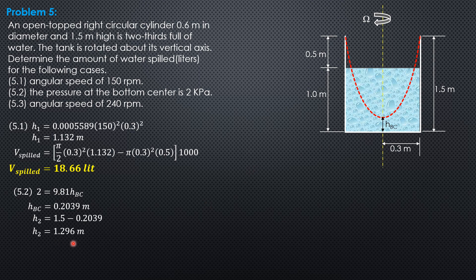Calculating in the same manner: pi over 2 times 0.3 squared times 1.296, minus the original volume of air which is pi times 0.3 squared times 0.5, then the quantity times 1,000. Volume spilled is equal to 45.85 liters.